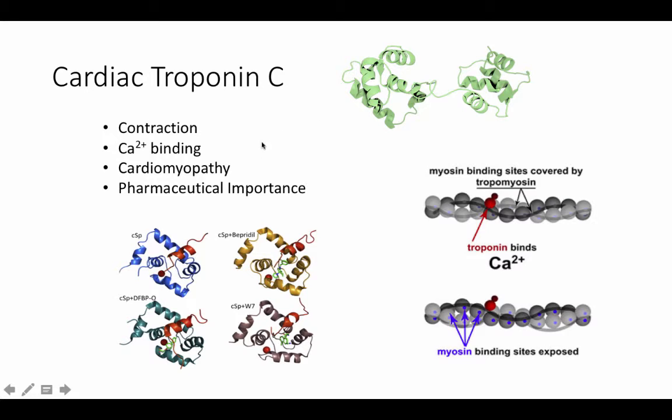Mutations in cardiac troponin C specifically have been associated with hypertrophic and dilated cardiomyopathy. Medicinally, cardiac troponin C is an important target for regulation of calcium binding affinity because it directly impacts the calcium sensitivity of muscle contraction for treatment of cardiomyopathies and heart failure.